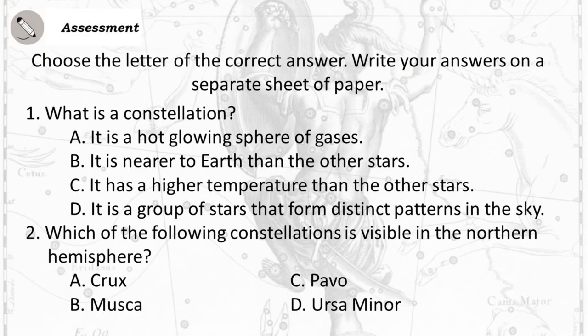Choose the letter of the correct answer. Write your answers on a separate sheet of paper. Question 1: What is a constellation? A. It is a hot glowing sphere of gases. B. It is nearer to Earth than the other stars. C. It has a higher temperature than the other stars. D. It is a group of stars that form distinct patterns in the sky.